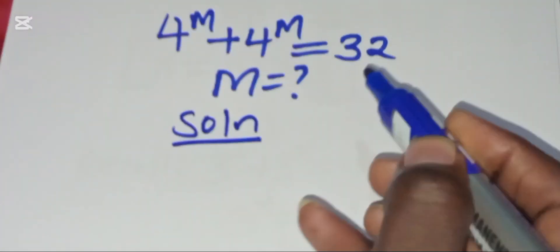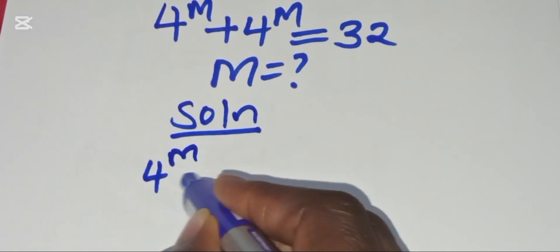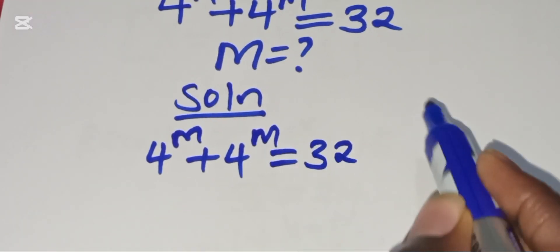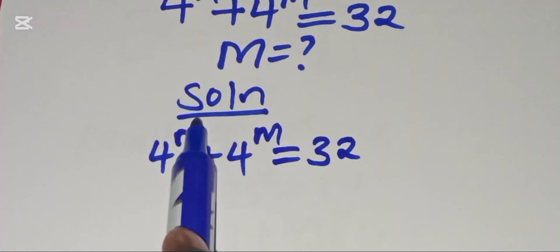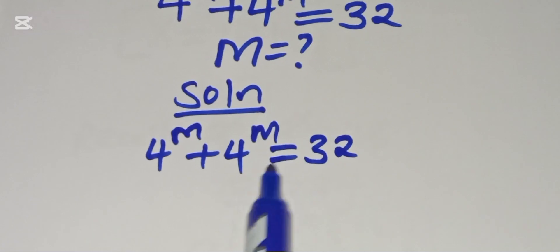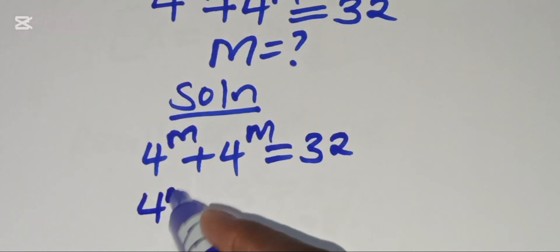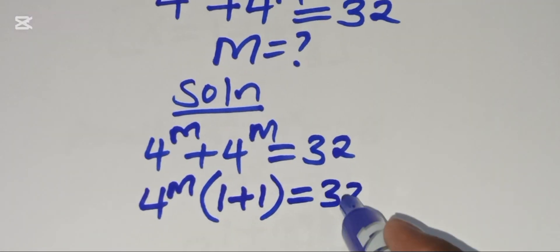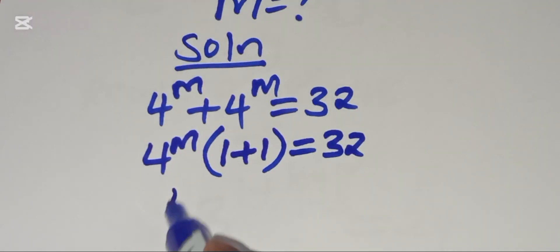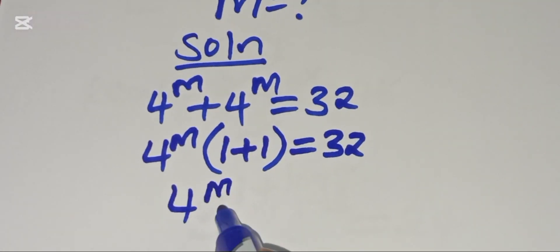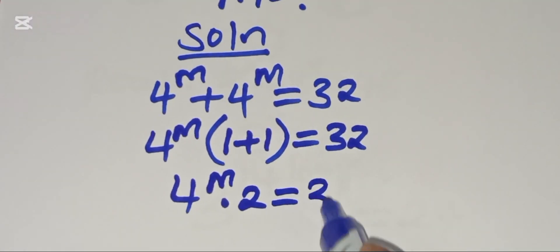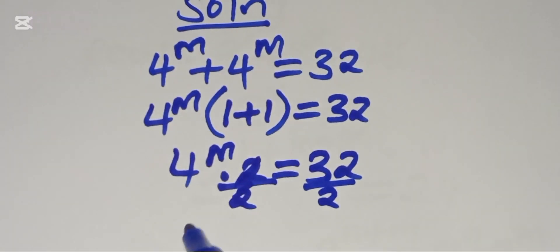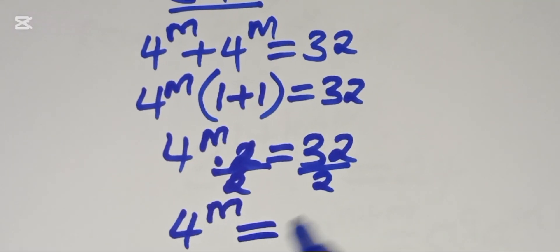We have 4 raised to the power m plus 4 raised to the power m equals 32. As you can see, 4 raised to the power m is common to both terms, so we factor it out to get 4^m times (1 plus 1) equals 32, which gives 4^m multiplied by 2 equals 32. Dividing both sides by 2, we get 4 raised to the power m equals 16.